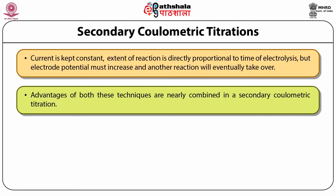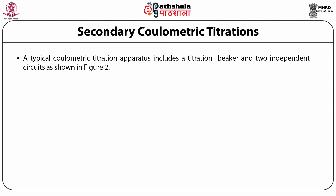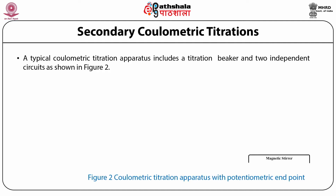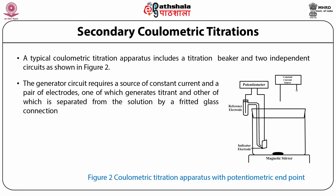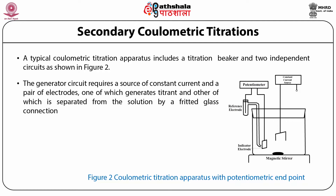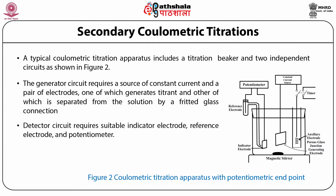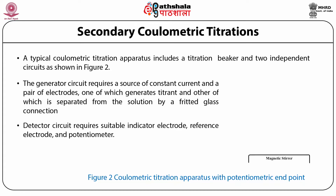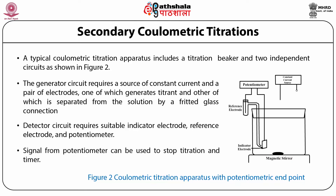In coulometric titration, the substance to be determined is indirectly titrated with a reagent that is electrolytically generated in situ. A typical coulometric titration apparatus includes a titration beaker and two independent circuits as shown in figure 2. The generator circuit requires a source of constant current and a pair of electrodes, one of which generates the titrant and the other of which is separated from the solution by a fritted glass connection. For precision and convenience, the switch controlling the current source also controls the timer. The detector circuit requires a suitable indicator electrode, reference electrode, and potentiometer. The signal from the potentiometer can be used to stop the titration and the timer.